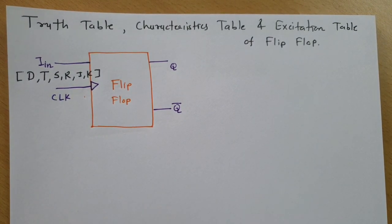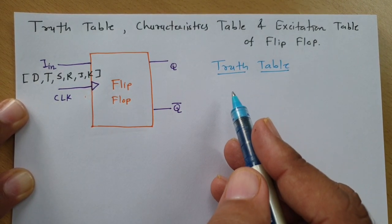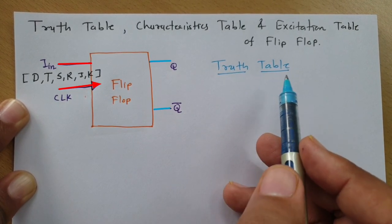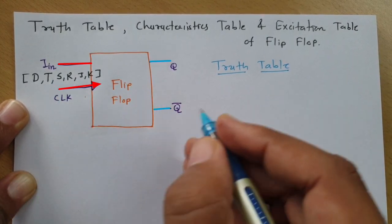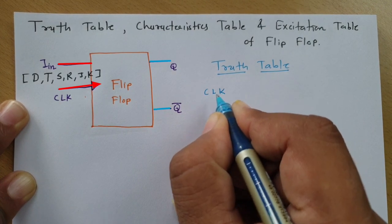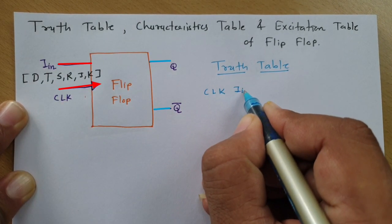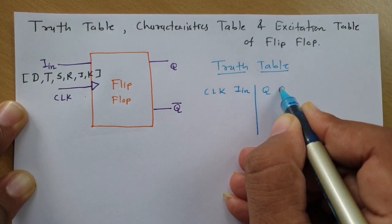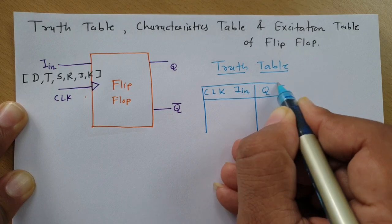Let us try to understand first what is the meaning of a truth table. A truth table is a table between input and output. When you make a truth table, you will have to make a table between input and output. The inputs are clock and the generalized input I-in, and the output will be Q and Q-bar. This is the truth table of a flip-flop.